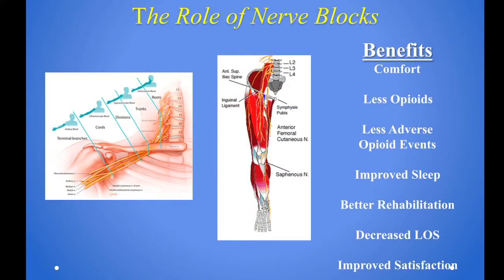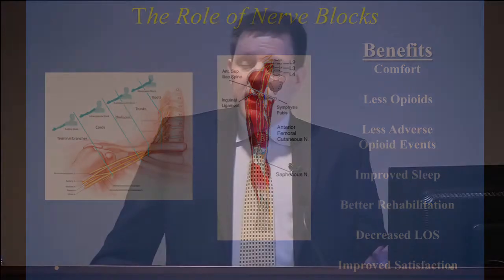We talked about nerve blocks. One diagram shows somebody's shoulder for a shoulder replacement or rotator cuff surgery. The middle picture shows the lower extremity — the nerves that go down to the hip and the knee. Depending on where the surgery is, we can deposit numbing medicines — Novocaine types — to those areas, numb up that region for 10 to 15 hours or even a few days afterwards.